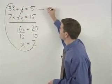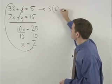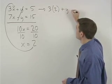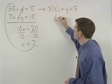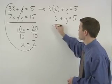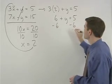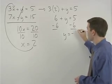This simplifies to 6 plus y equals 5, and subtracting 6 from both sides gives us y equals negative 1.